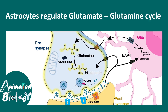Now let's talk about oligodendrocytes, another type of glial cell present in the central nervous system. Oligodendrocytes play a key role in myelinating axons, which is critically important because without myelination, conduction is slow. Myelination acts like insulation, increasing the speed of nerve conduction and enabling saltatory conduction. The efficiency of neuronal signal transmission is enhanced with myelination. Notably, one oligodendrocyte can myelinate several axons and extend its processes to reach multiple neurons that are spaced apart.